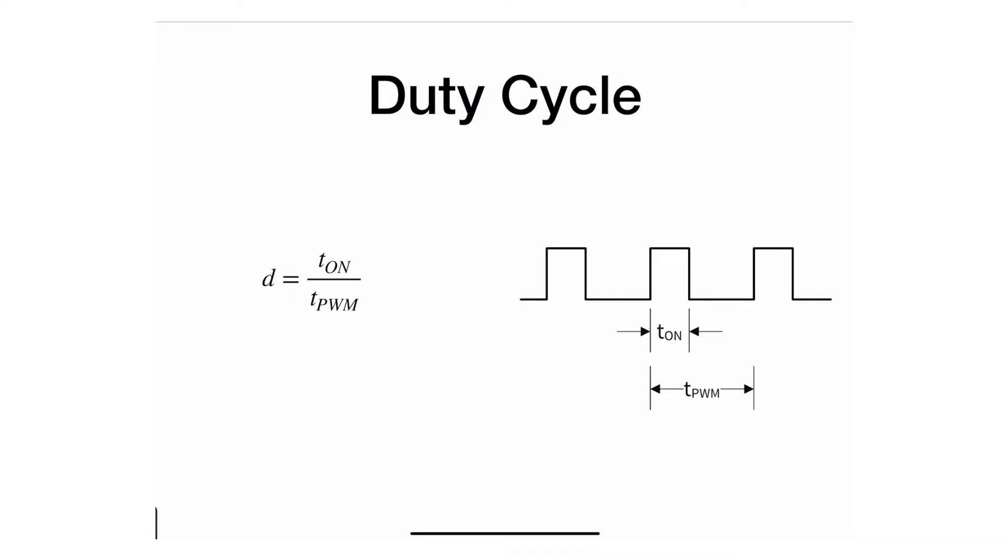Duty cycle by definition is the proportion of time that the signal stays in the on position versus the total period of the whole signal. If you write the equation for it, it's basically just a percentage between the on proportion versus the total period of the pulse width modulation cycle.